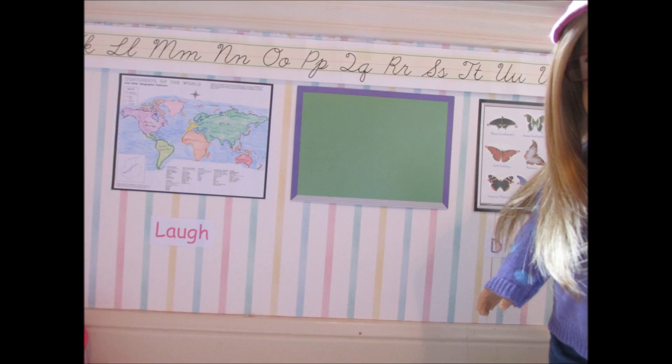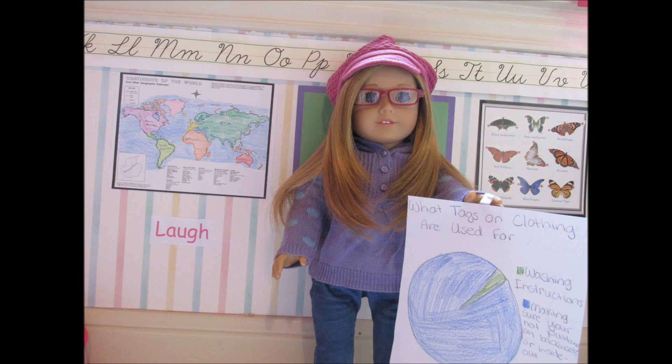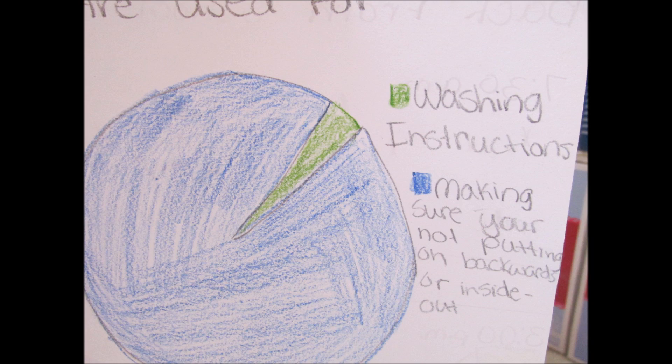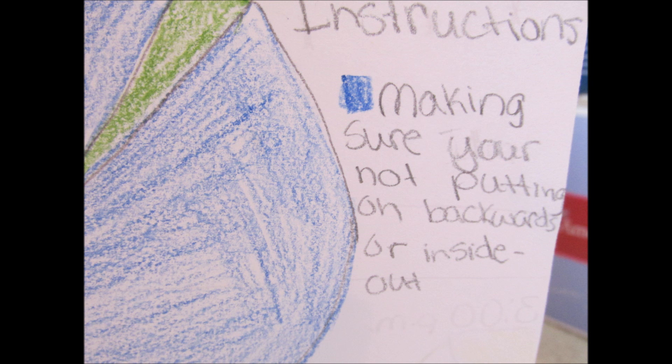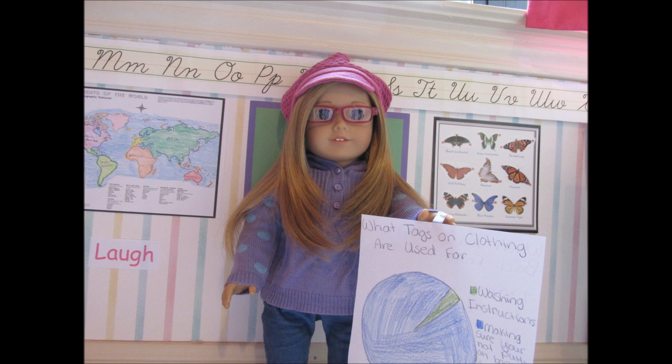Emma, you're the last one. My project is on the uses for tags on clothing. The green stands for washing instructions, and the blue stands for making sure you're not putting your clothes on backwards or inside out. Here's the graph. Thanks.